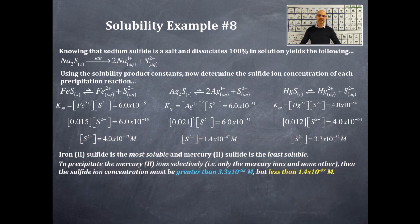Okay, to precipitate the mercury 2+ ions selectively, i.e. only the mercury ions and none other, then the sulfide ion concentration must be greater than 3.3 times 10 to the negative 52, but less than 1.4 times 10 to the negative 47. So, where am I getting these values from? Well, that's the 3.3 times 10 to the negative 52. It needs to be greater than that in order to start precipitation, but yet less than this value because I want to selectively precipitate only the mercury 2+ ion and not the silver and not the iron. All right.